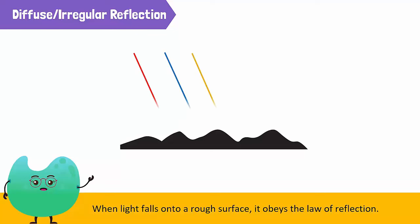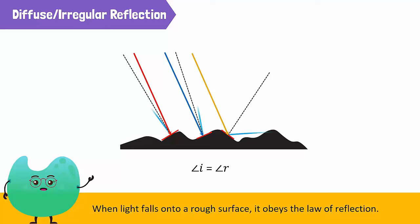Look at the red ray and the blue ray. Because the surface is uneven, their normals point in different directions. The angle of reflection equals the angle of incidence in each ray. That's why the red ray and the blue ray reflect in different directions, and the overall effect is that the parallel incident beam reflects in all directions.